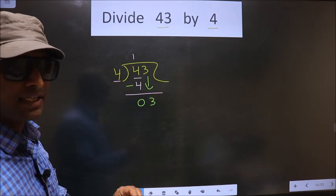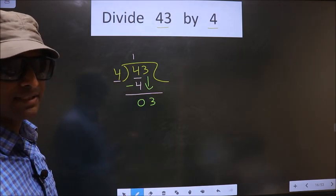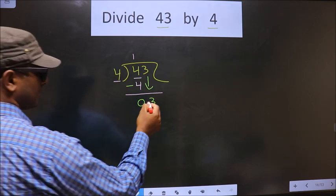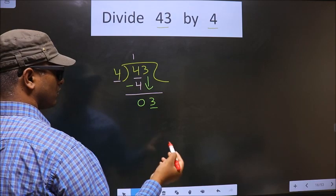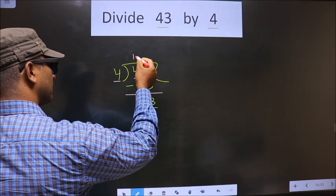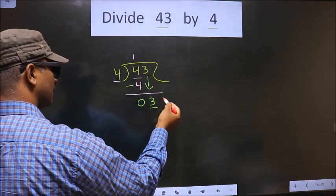This is where the mistake happens. And the mistake is this one. Here we have the number 3. 3 is smaller than 4. So what many do is they put a dot here and take 0 here.